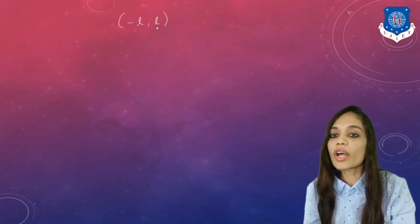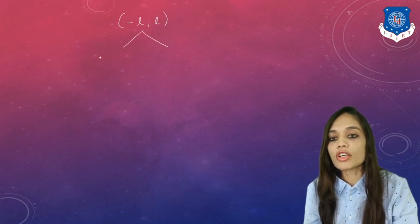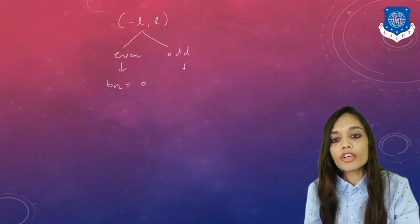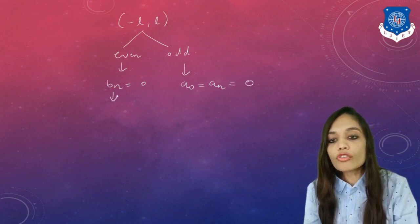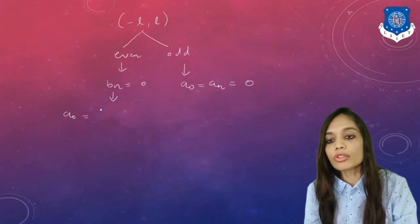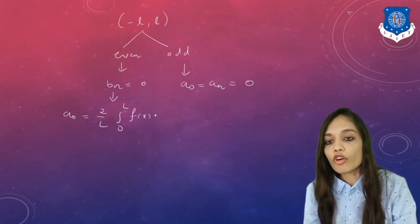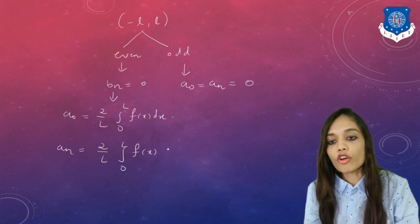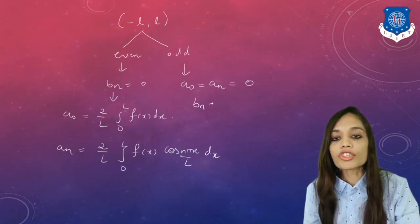In today's session we learned to find the Fourier series on the symmetric interval (−L, L). First check whether the function is even or odd. If even, Bn = 0 and we find A0 = (2/L)∫₀ᴸ f(x)dx and An = (2/L)∫₀ᴸ f(x)cos(nπx/L)dx, giving the Fourier series f(x) = A0/2 + Σ An·cos(nπx/L).